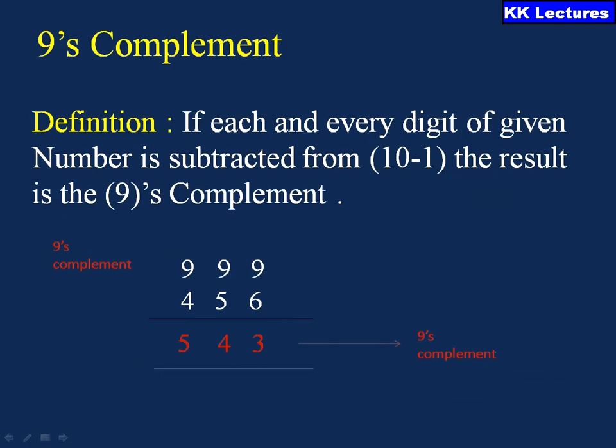Coming to the 9's complement: since it also falls under the R minus 1's complement, if each and every digit of the given number is subtracted from 10 minus 1, that is from 9, the resultant is the 9's complement. For example, the 9's complement of 456: subtracting each digit from 9 gives 5, 4, 3, which is the 9's complement of 456.